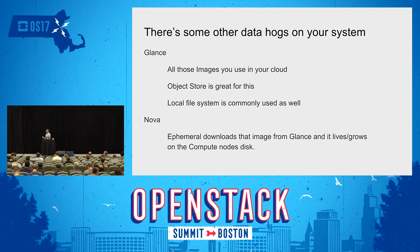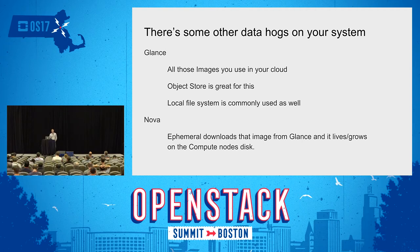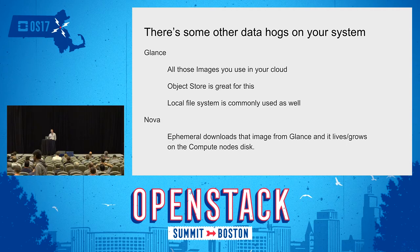A lot of people don't realize that inside of an OpenStack setup, there's actually a lot of data being consumed in various places. Glance is a big one because you're putting all of your OpenStack images up there. If you have an Ubuntu server image that's custom with a gig of data, you're actually using up all that storage for that image somewhere. In most cases, people are using Object Store for that, which is a great fit — it's cheap, it's deep, it's a good way to go. Other folks are commonly using local file system, which is not so good because there are no efficiencies to be gained there and it's relatively expensive.